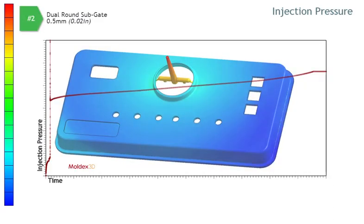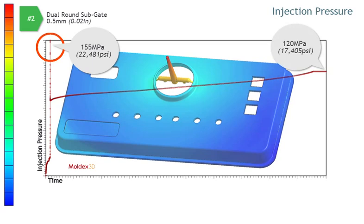The next example with the dual round sub-gate and larger 0.5 mm gate also shows a pressure spike of about 155 MPa due to the small gate. Here, the required injection pressure has dropped to 120 MPa.